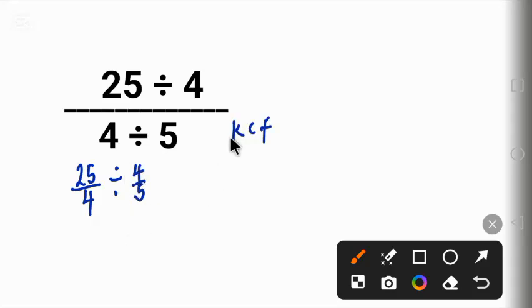Using this rule, KCF: K stands for keep the first fraction, that is 25 over 4. C stands for change the division to multiplication, and F stands for flip the last fraction.